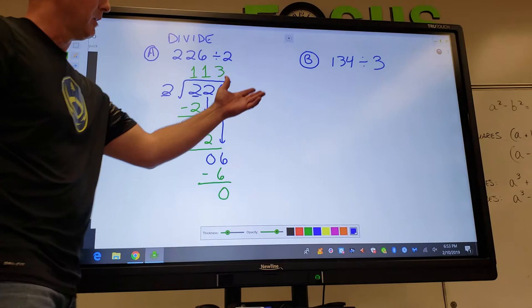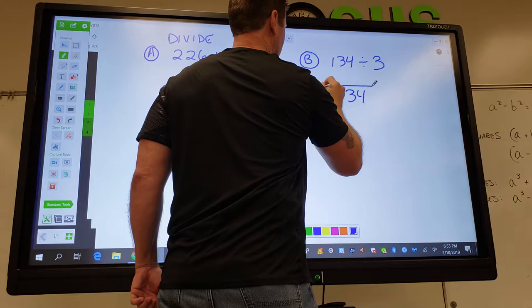What happens if there is a remainder? Example B. Again, 134 goes inside the house. Why? Because it's listed first, not because it's bigger.